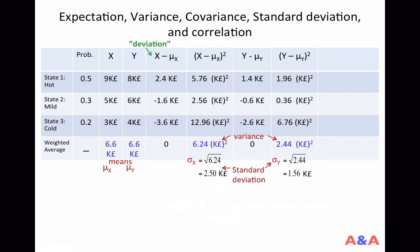For this reason, more popular than variance as a measure of risk or variability is the standard deviation, denoted by the Greek letter sigma. So sigma-x is the standard deviation of random variable x. You just take the square root of the variance to get the standard deviation. The standard deviation of x is the square root of 6.24 million pounds squared, equal to 2,500 pounds. For y, the standard deviation is 1,560 pounds — much smaller than that of x, so y is less risky.